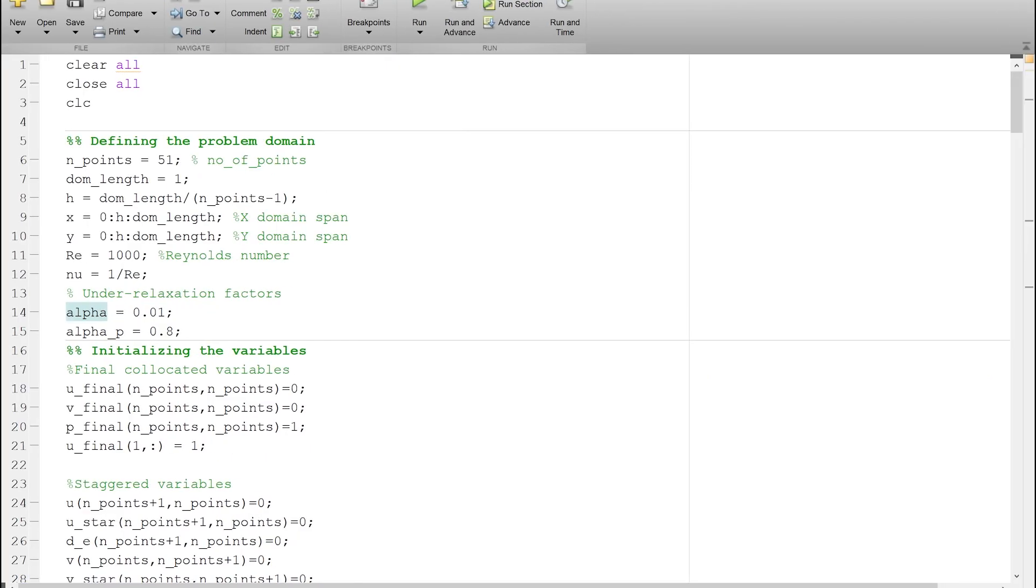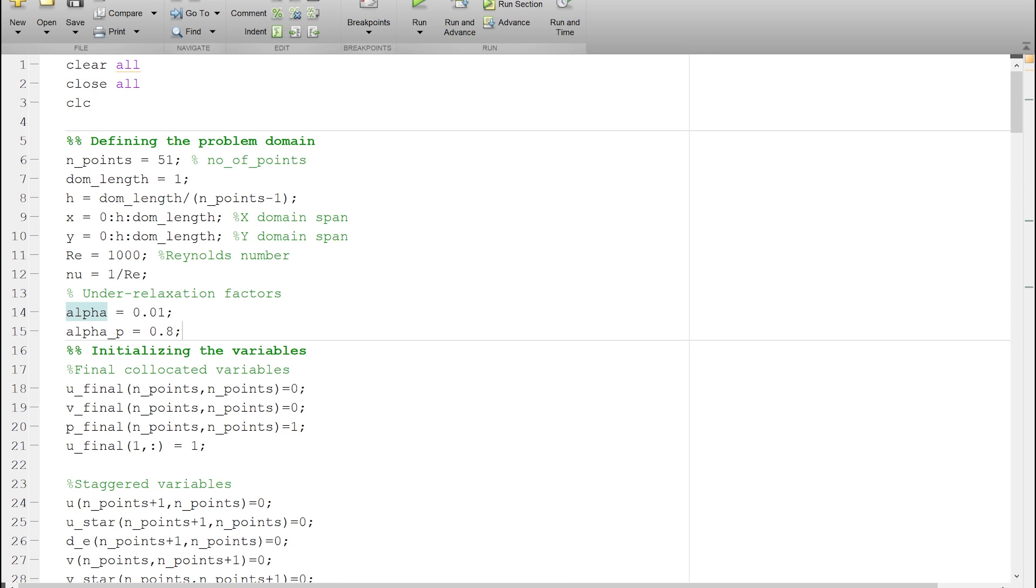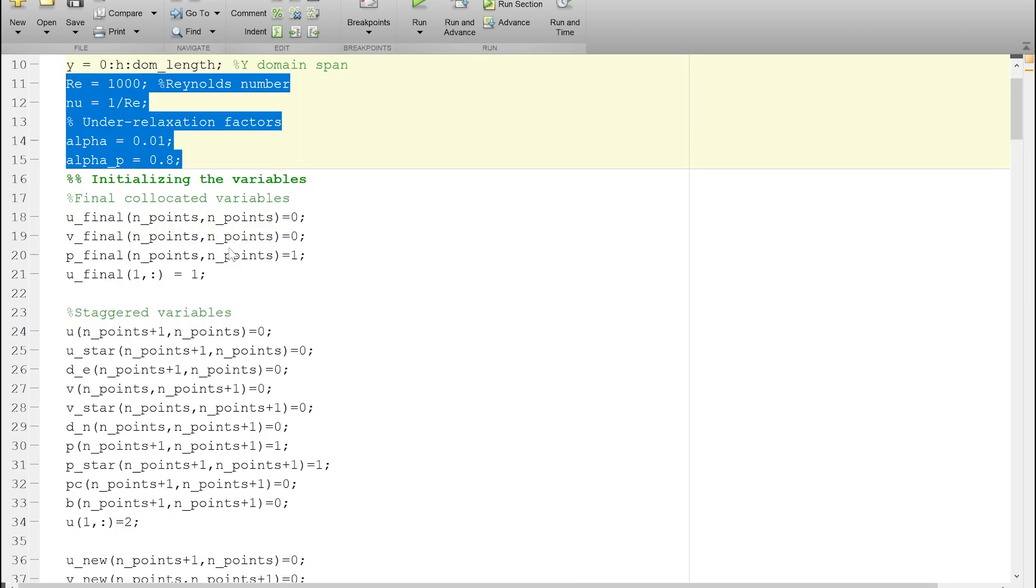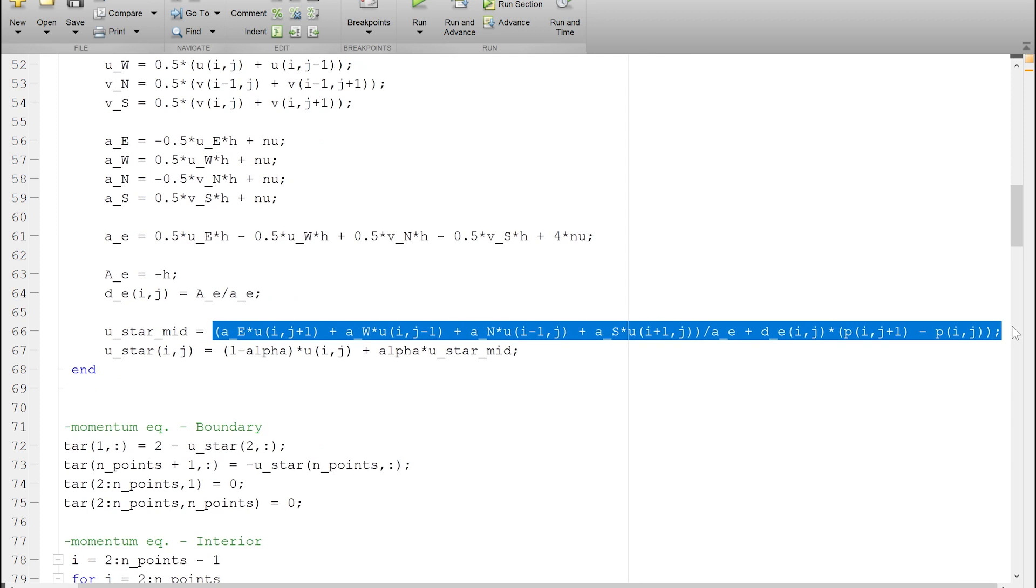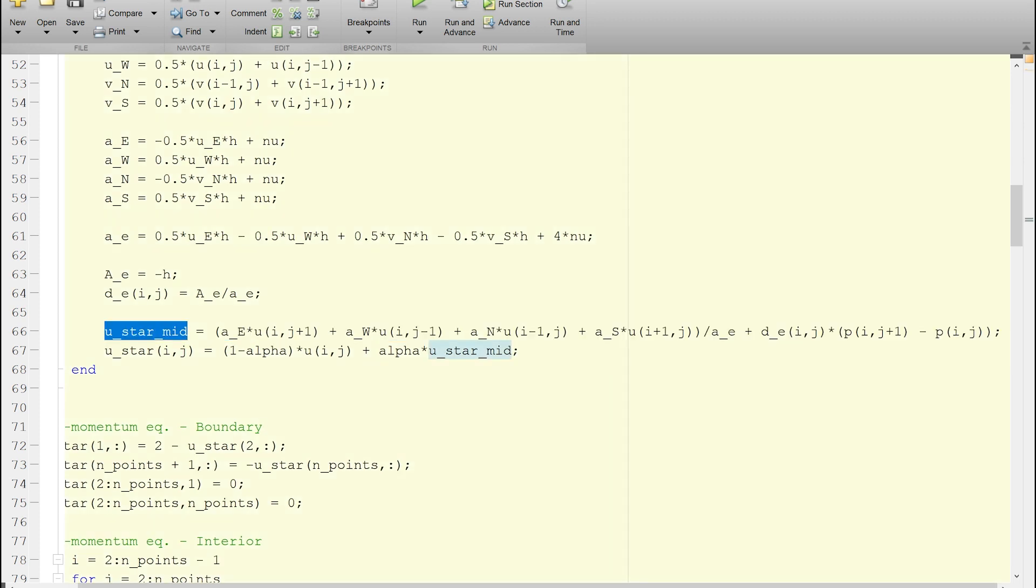If I switch to the revised version of the code, I have exactly the same parameters. What I'm doing now is rather than saying that this particular expression is U star, I call this as U star mid, just like an intermediate value for U star. Then I define U star to be alpha times the U star mid and 1 minus alpha times the U, which is the old value.